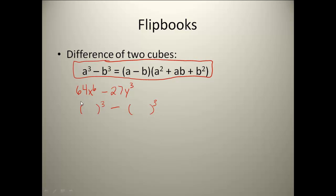At first glance, you might not think that 64x⁶ is a cube because the exponent with x is a 6 instead of a 3. But keep in mind our rules of exponents. Since 6 is a multiple of 3, I can use multiplication to get x⁶. So for 64, look on your cheat sheet — you need to take 4 cubed to get 64. For x⁶, I need x to some power raised to the 3rd. When we have a power of a power, we multiply exponents, so 3 times what power gives me 6? That would be 2. So it's really (4x²) cubed.